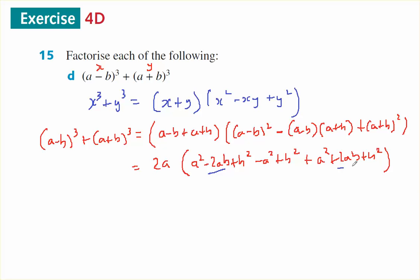This and this sum to 0, this and this sum to 0, which leaves me with 3b squared and an a squared.